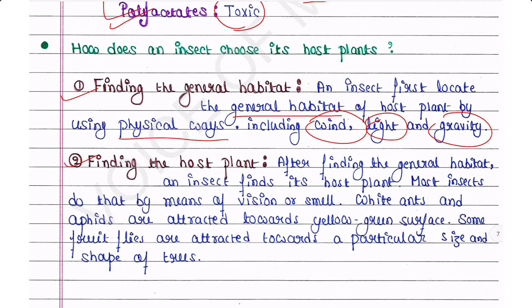Second is finding the host plant. After finding the general habitat, an insect finds its host plant — most insects do so by means of vision or smell. For example, whiteflies and aphids are attracted towards yellow-green surfaces, and some fruit flies are attracted towards a particular size and shape of trees.